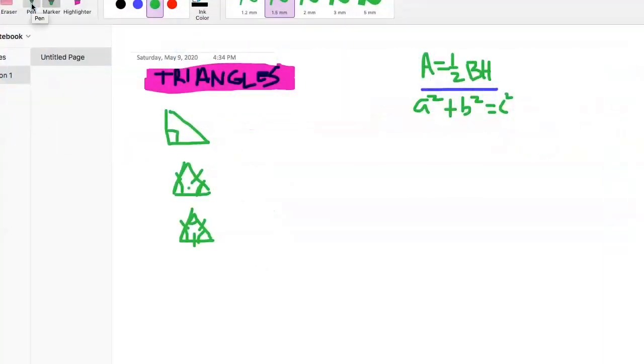All right guys, ready for some triangles? Okay, so first we've got three different types of triangles and you just need to be familiar with each of these. The three different types are right triangle, equilateral, and isosceles.